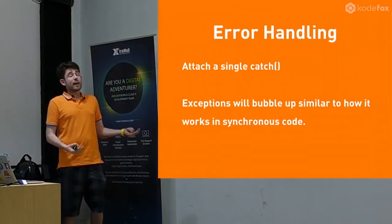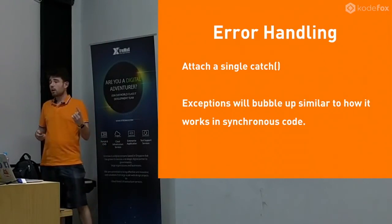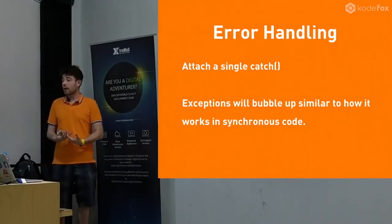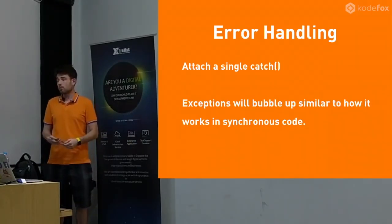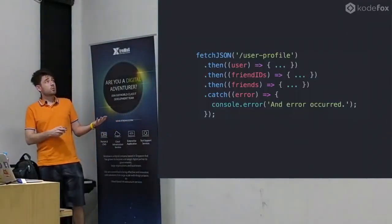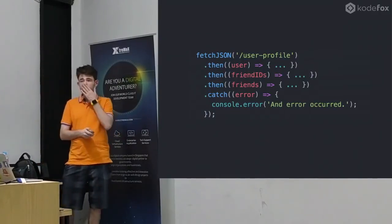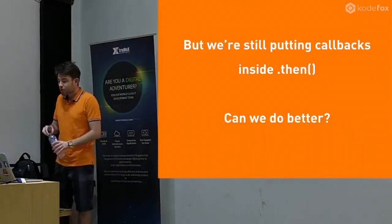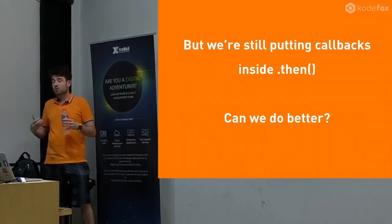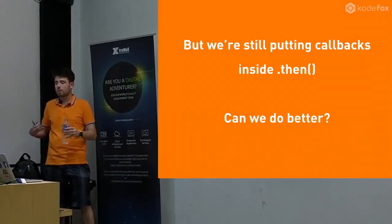For error handling, we get a catch. We don't have to check every single time for this error - we can just attach one catch function at the end. Exceptions will bubble through our code the way we expect with try-catch in normal programming. In our user profiles example, we can just add one catch at the very end and grab that error. But we're still putting callbacks inside of then - we're still doing callbacks. It's a nicer way to do callbacks, but ultimately we still have to pass these functions.